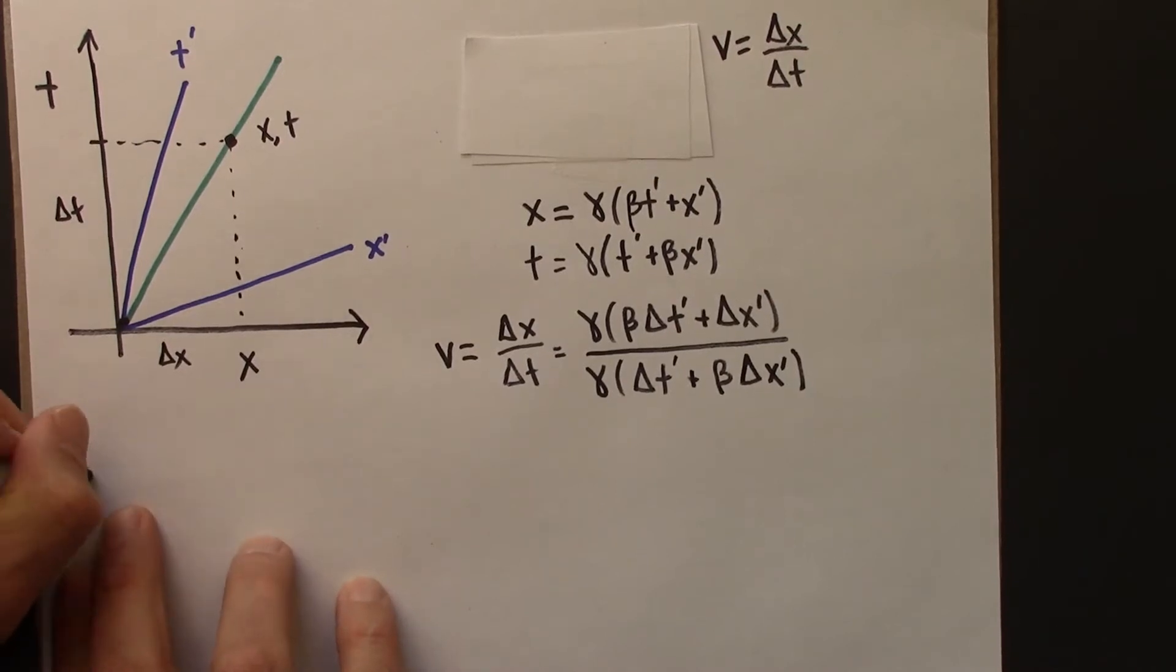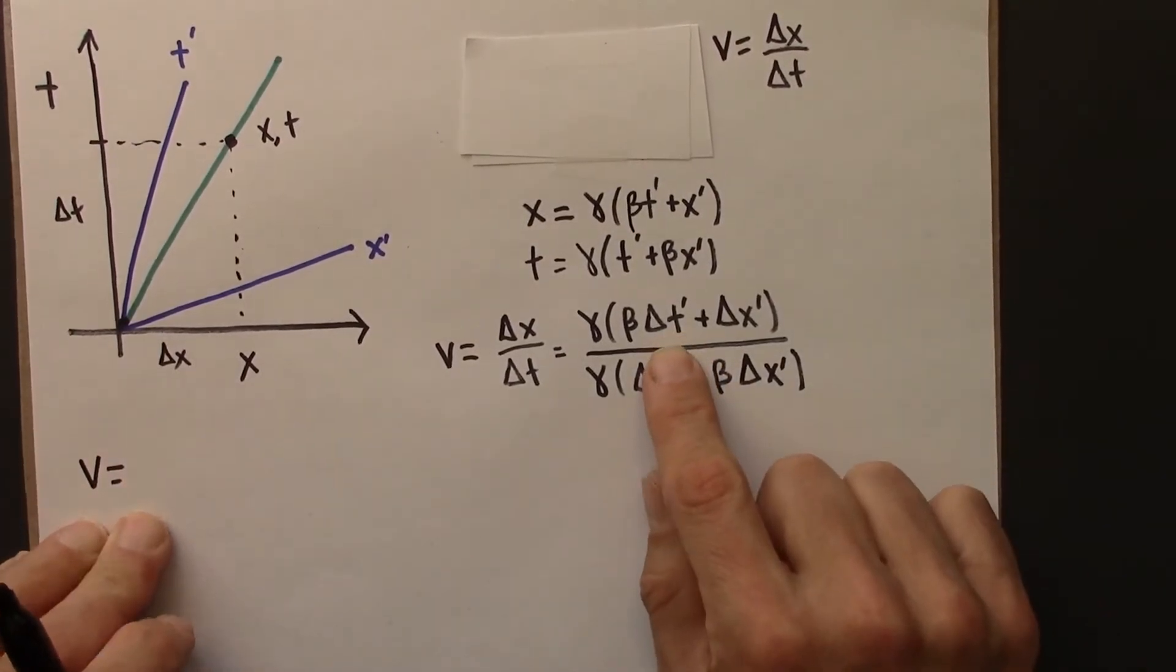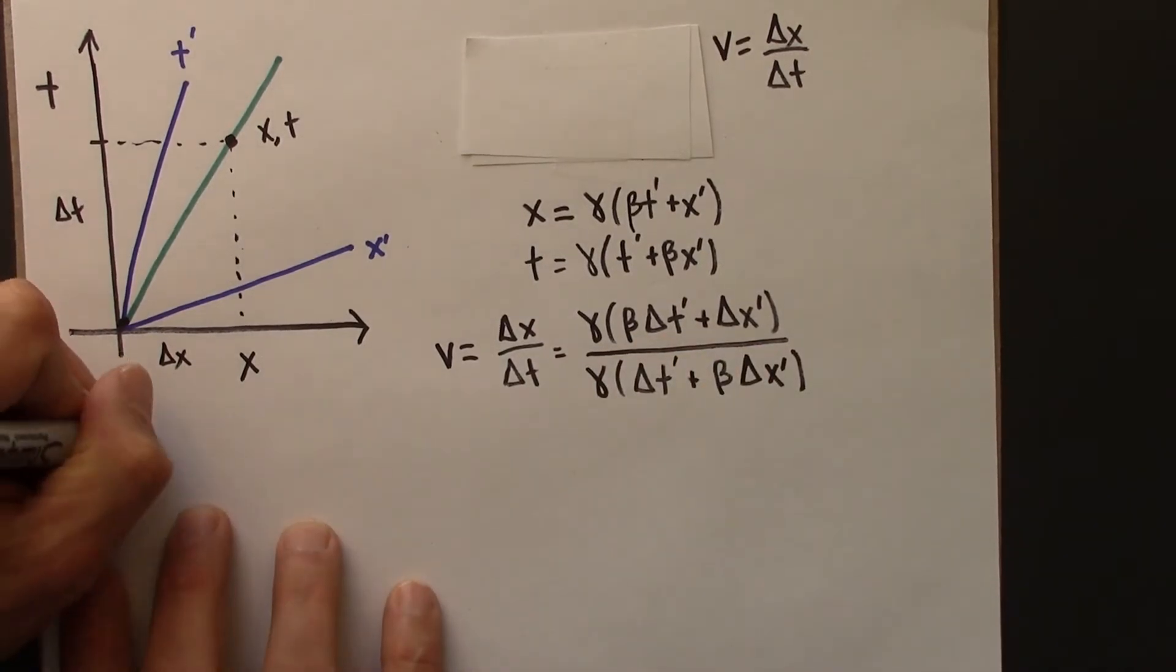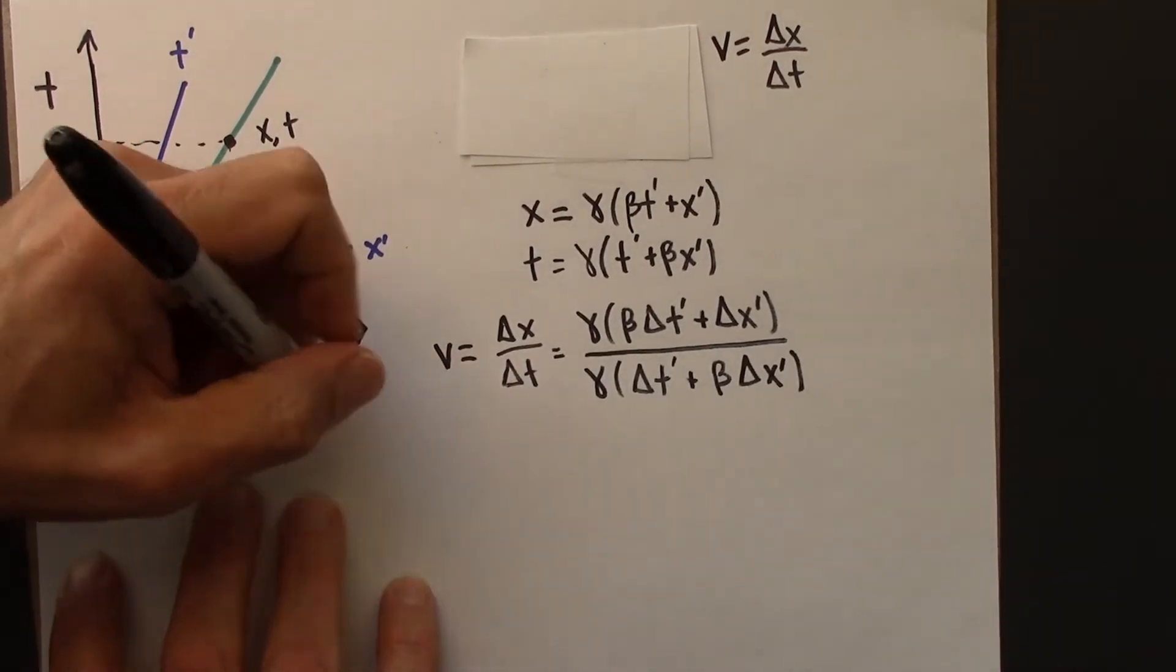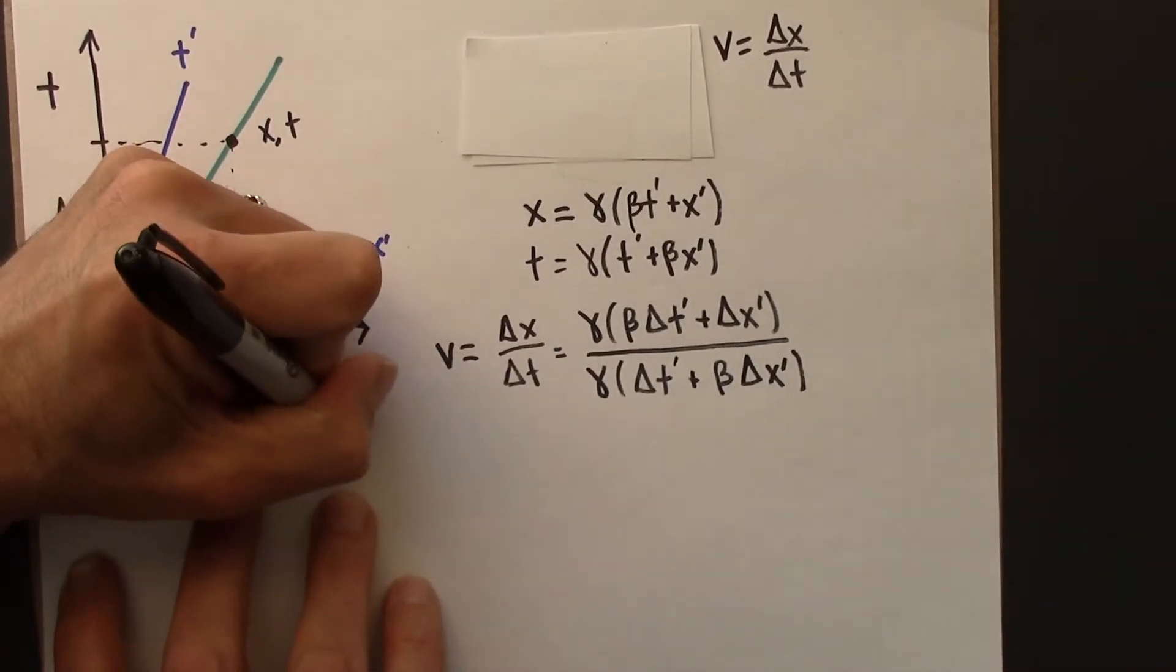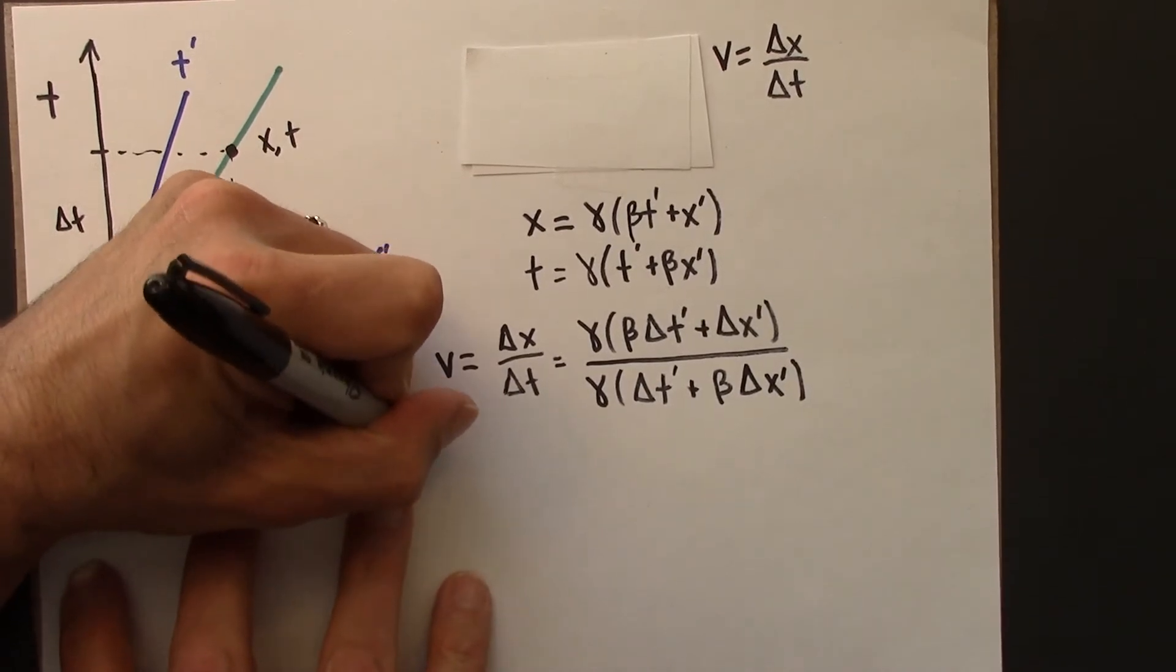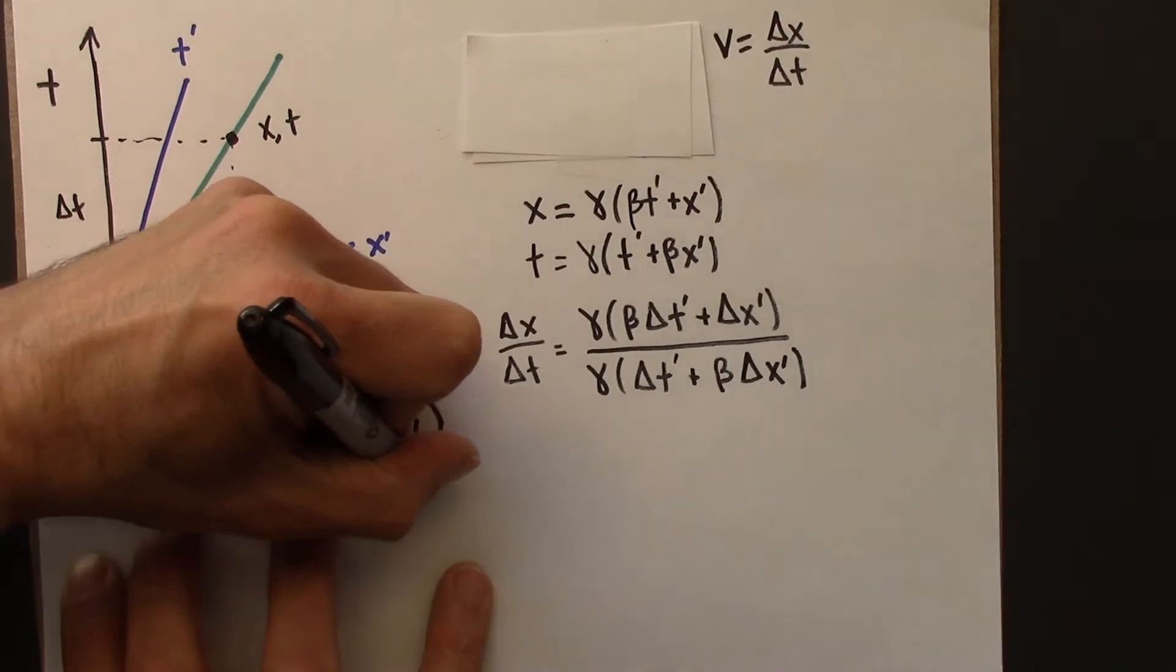So I'll do that over here. And what I'm going to do is I'm going to factor a delta t squared out of the top and the bottom. And you'll see why this is a nice thing to do in a moment.